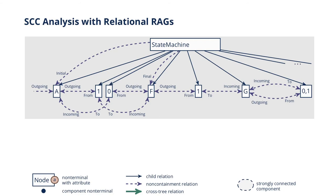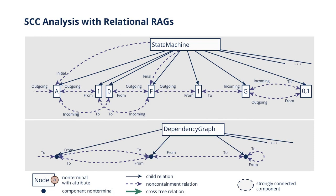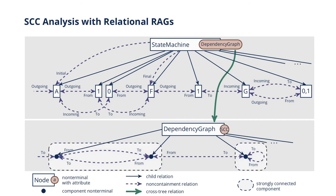Let's see how this looks for the state machine example. Here we see a diagram of the state machine AST. The tree structure is shown with normal edges; non-containment relations are dashed. An AST is added specific to the problem — this is the corresponding AST, which only contains components and relations connecting them. We can define a higher-order attribute, here called dependency graph, on the root of the original tree. This attribute computes the dependency graph AST. Then we can specify and compute the analysis attribute SCC on the newly created AST. To be able to interpret the results, the dependency graph must contain relations back into the original tree. Finally, we have all the tools to decouple the analysis.